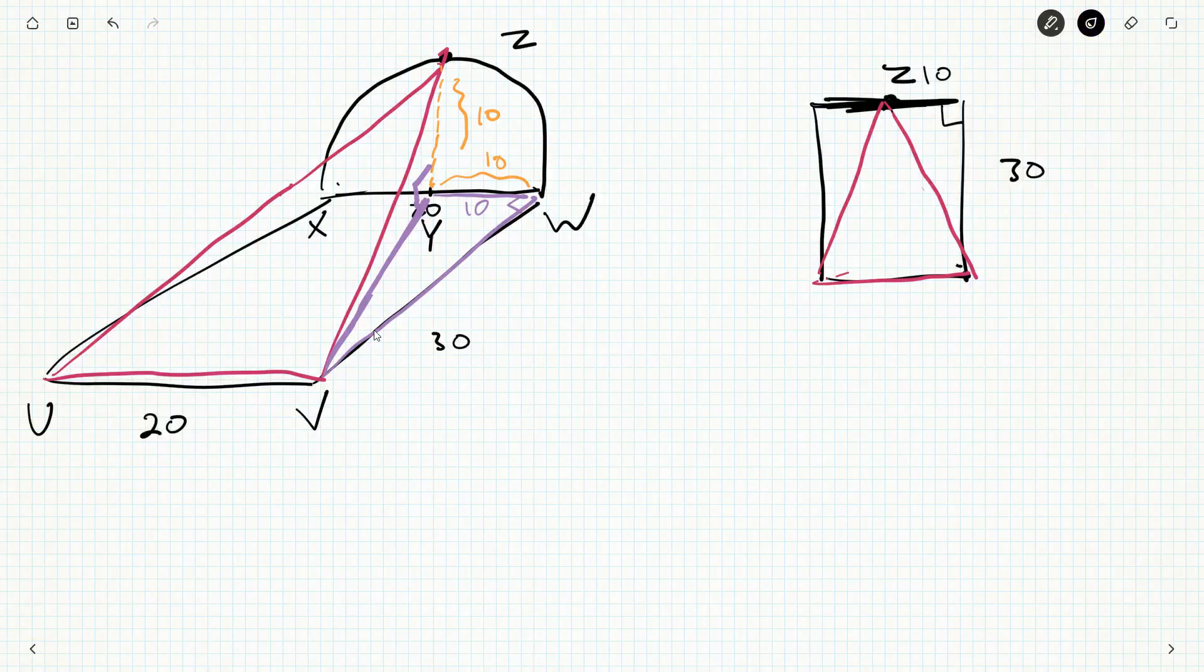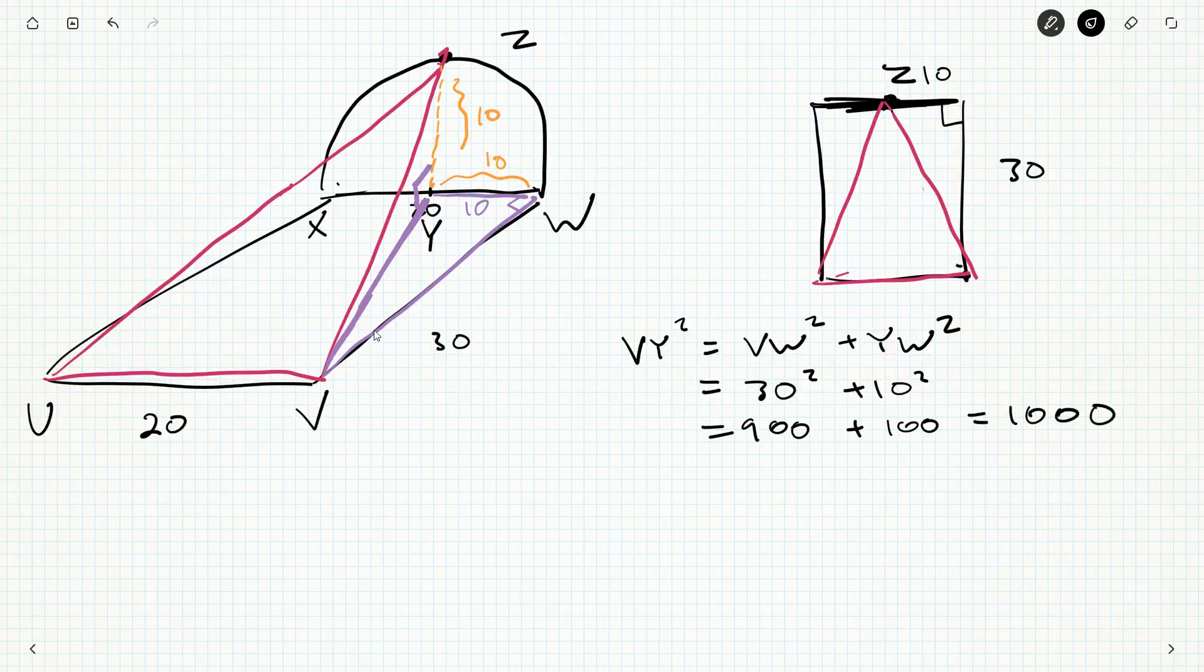So, I'm going to let Y be the midpoint there. So, now, VY squared is VW squared plus YW squared, but that's 30 squared plus 10 squared, and that's going to be 900 plus 100. It's going to be 1,000. Now, I could square root it and say, oh, okay, this length here is square root 1,000, but I don't need it. I want VZ, and by the same token, by symmetry here, UZ is going to be the same as VZ. So, UZ squared is the same as VZ squared, but VYZ is right angled at Y. So, this is going to be VY squared, 1,000, plus YZ squared, which is 10. So, this is 1,000 plus 10 squared equal to 1,100. That's VZ squared. That's also UZ squared.